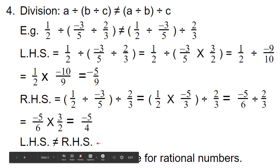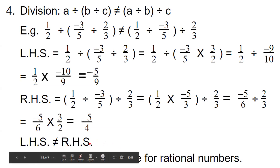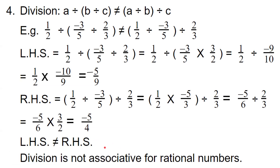From this, we can generally say that addition and multiplication are associative for rational numbers, while subtraction and division are not associative for rational numbers. Let us conclude today's video. We will discuss the remaining properties in the next video. Thank you.